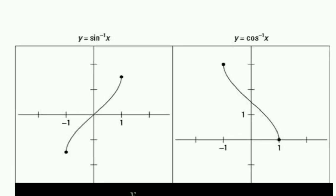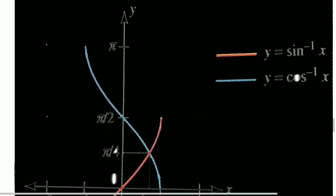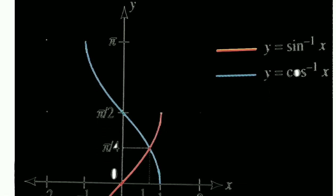The first graph is y = sin⁻¹x and the second graph is y = cos⁻¹x. If you did not understand this one you can copy it here. The straight perpendicular line is the y-axis.